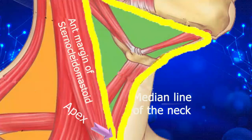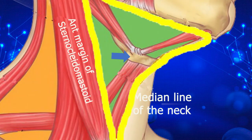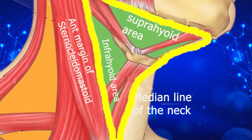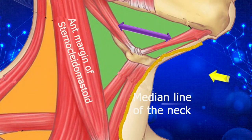The anterior triangle can be divided into two main areas based on the position of the hyoid bone. We see the area above the hyoid bone called the suprahyoid area and then we find another area below the hyoid bone called the infrahyoid area. A more popular and common subdivision is the subdivision of this anterior triangle into four smaller triangles by the passage of two muscles, the digastric muscle and the omohyoid muscle.